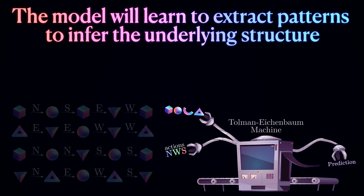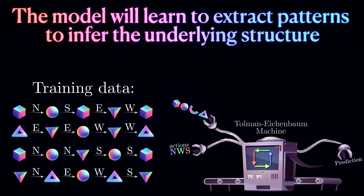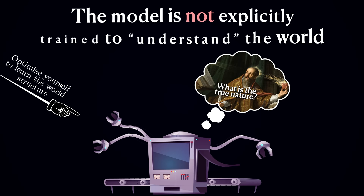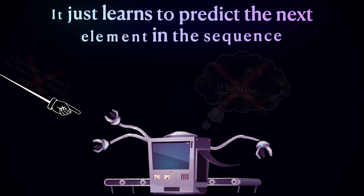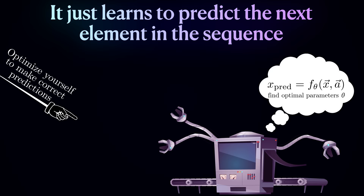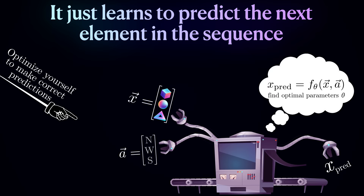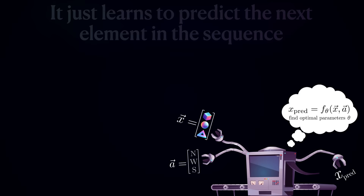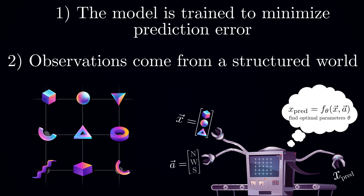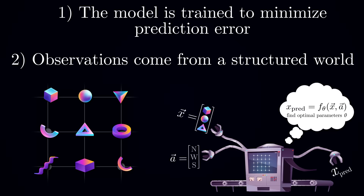For example, after seeing a large number of sequences, it should infer the rules of how different actions relate to each other, which is equivalent to constructing the structure of space. It's important to note that although the model will learn the underlying structure of the world, it is not told to do that exactly. The model has no other goal than predicting the next observation in the sequence. But because we train it to minimize prediction error, and since these observations come from some structured world, the optimal solution is to construct some structural representation of this world. So we simply expect the knowledge about this structure to emerge as a result of optimization.